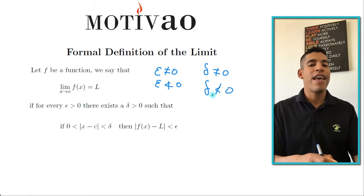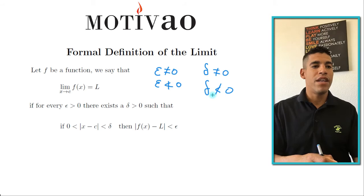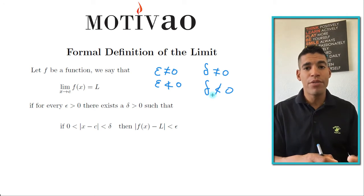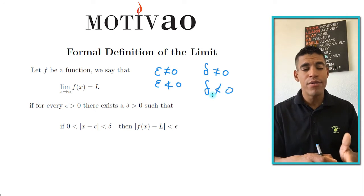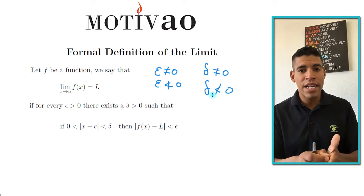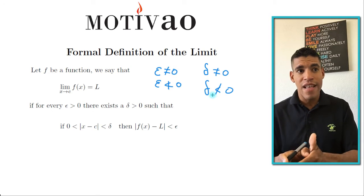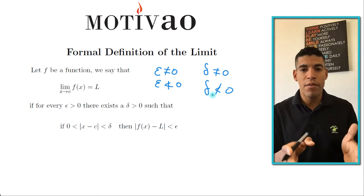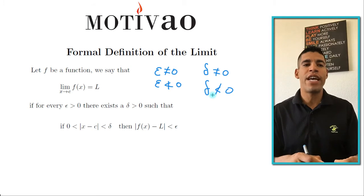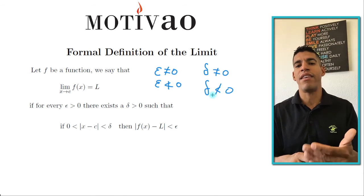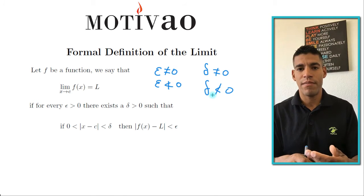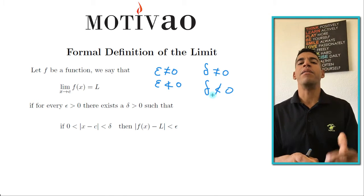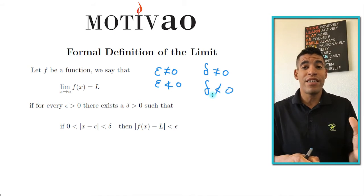The condition that must be satisfied is: if 0 < |x − c| < δ, then |f(x) − L| < ε. That is the premise — that is what changed history.